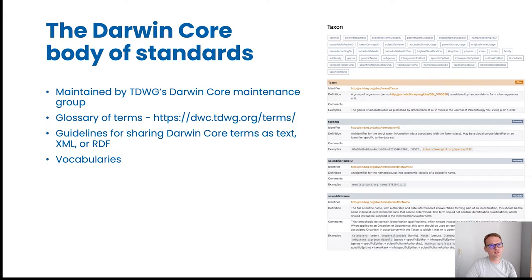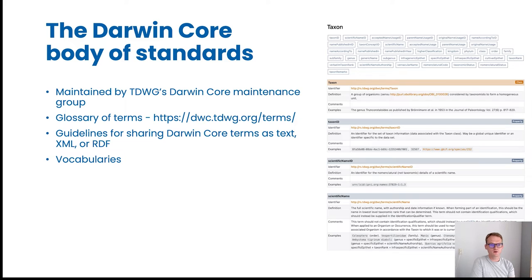Our main data standard is Darwin Core. Darwin Core is managed by TDWG and it includes a glossary of terms. It also includes guidelines for sharing Darwin Core aligned data as text, XML or RDF, and it includes some vocabularies. The glossary of terms includes over 200 terms, each with an identifier, a definition, and some examples of how they can be used.